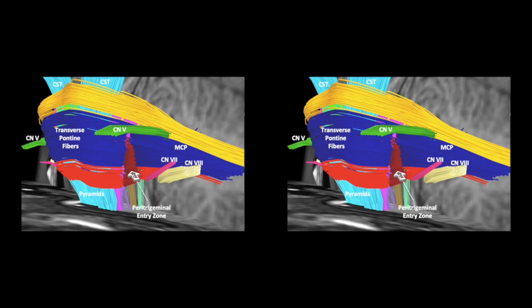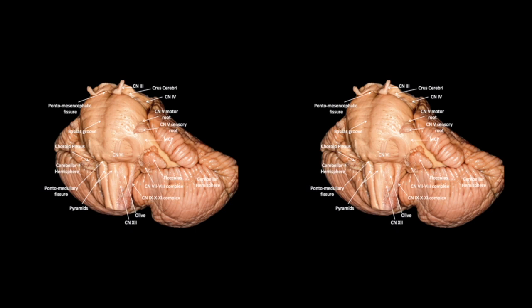The peritrigeminal entry zone is a well-described safe entry zone to the ventral lateral pons. This is roughly located between cranial nerves 5 and 7 and courses behind the corticospinal tracts, only disrupting some of the mid and lower transverse pontine fibers. Using the peritrigeminal entry zone, there are a few options to approach our lesion. Through a retrosigmoid approach, there are typically difficulties in accessing the posterior-most components of the cavernous malformation. The pre-sigmoid retrolabyrinthine approach provides a more ventral angle of attack and can better access these dorsal components.